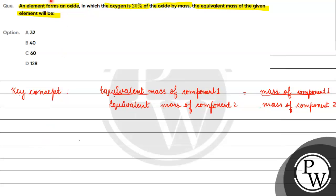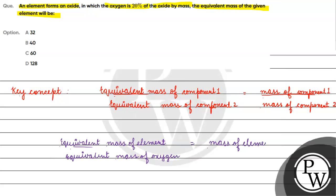If we talk about here, we have given that the element forms an oxide. So what will happen here? Equivalent mass of element divided by equivalent mass of oxygen will equal mass of element divided by mass of oxygen.